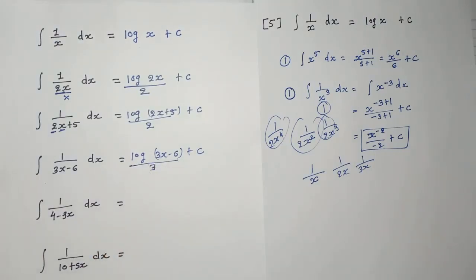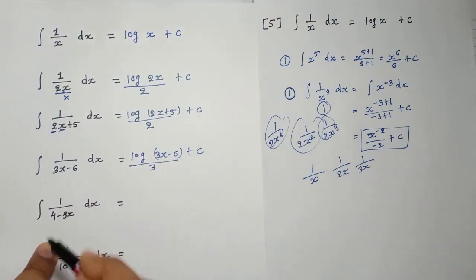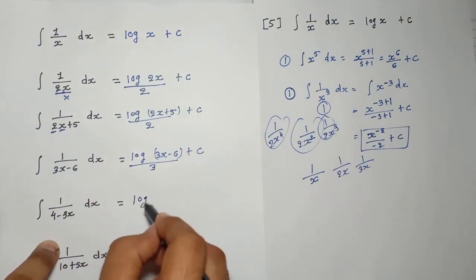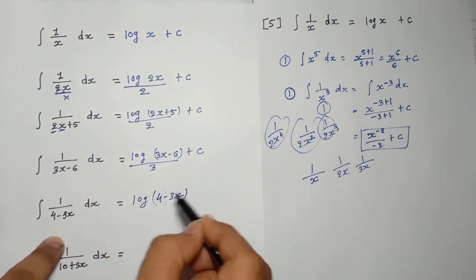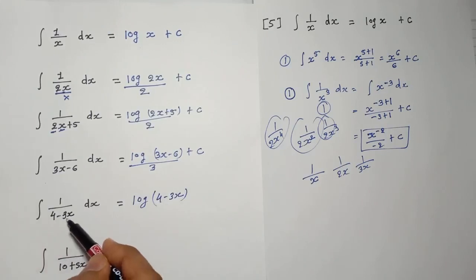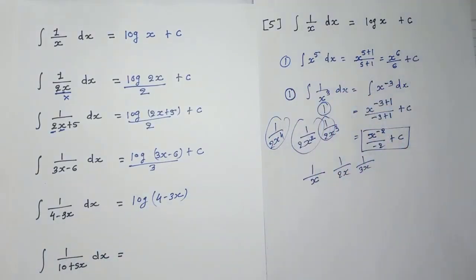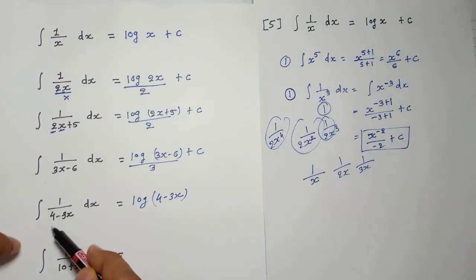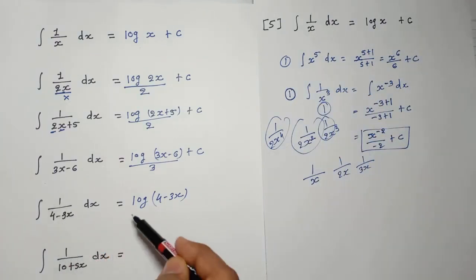Here, 1 divided by 4 minus 3x: as there is only x, we write log(4 − 3x). Now check: minus 3 is multiplied by x, so here we divide by minus 3. Plus c.